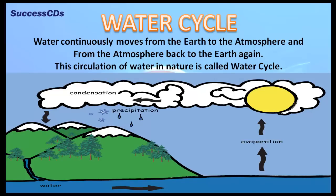Water continuously moves from the earth to the atmosphere and from the atmosphere back to the earth again. This circulation of water in nature is called the water cycle.